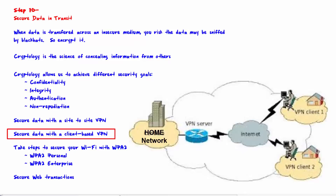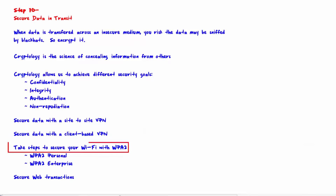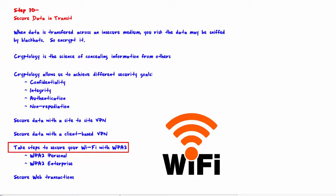Take steps to secure your Wi-Fi with WPA2 Personal or Enterprise. Anytime Wi-Fi is used, there is the potential that the RF (radio frequency) signal could be sniffed by a black hat who is able to receive that signal. Wi-Fi is inherently more insecure than wired transmission because the RF signal could be picked up by somebody sitting outside the building. WPA2 is built into wireless access points specifically for this purpose. Earlier versions of Wi-Fi security — WPA and WEP — are now obsolete, insecure, and should not be used.